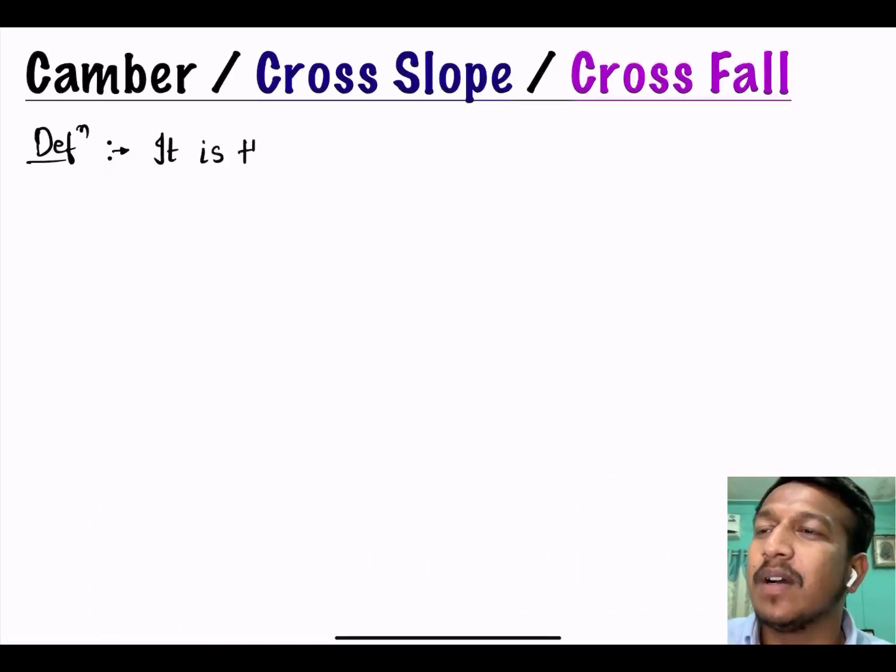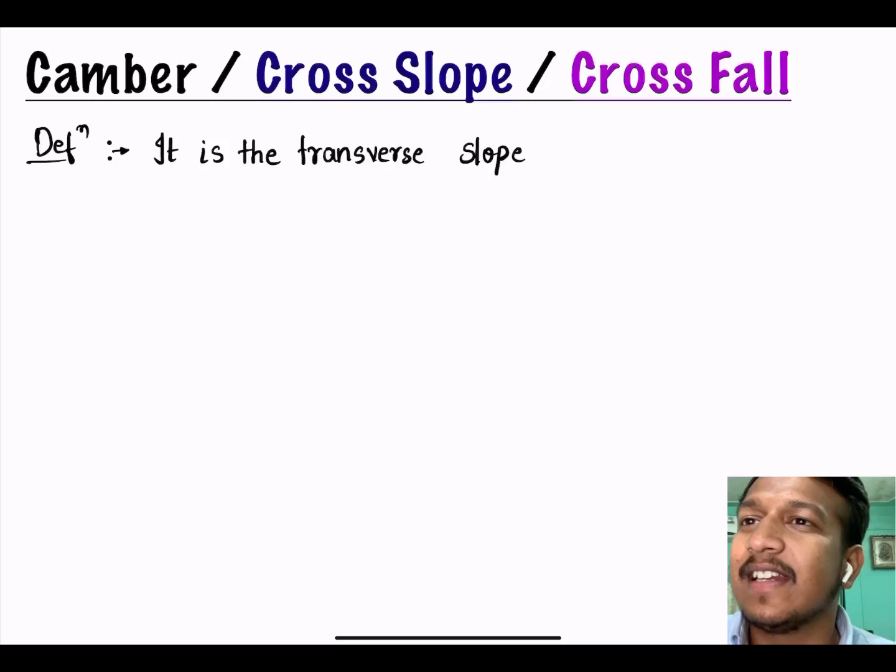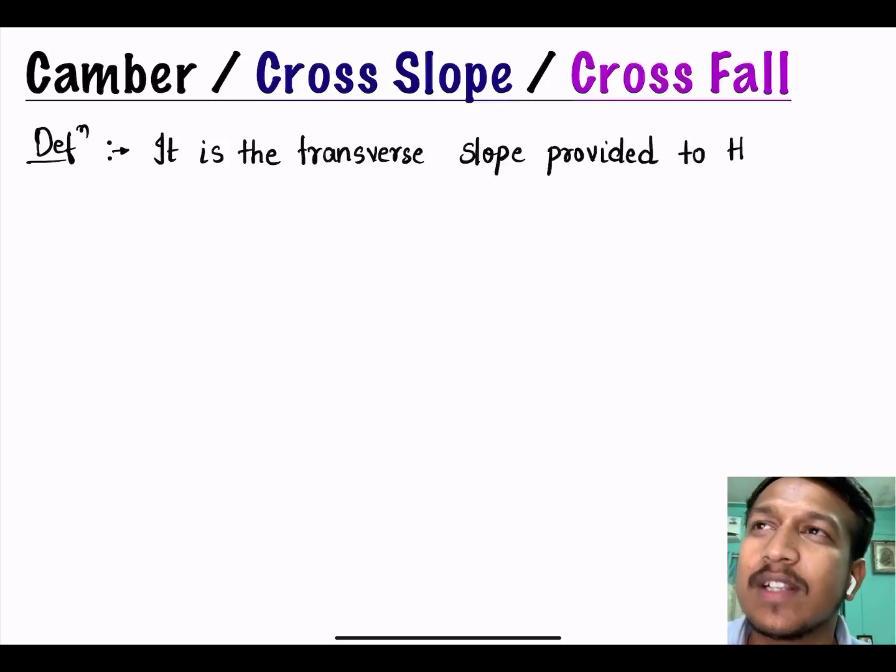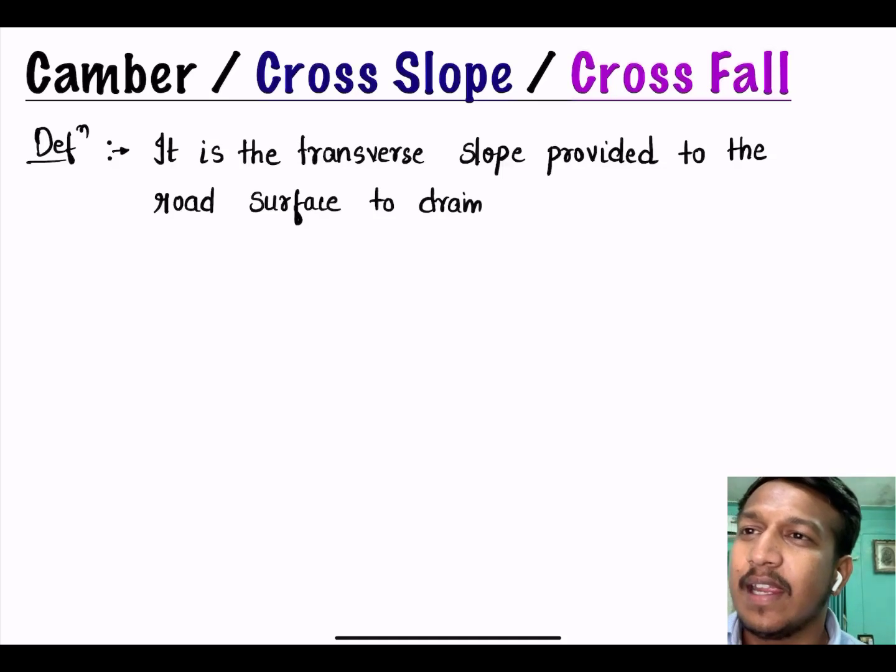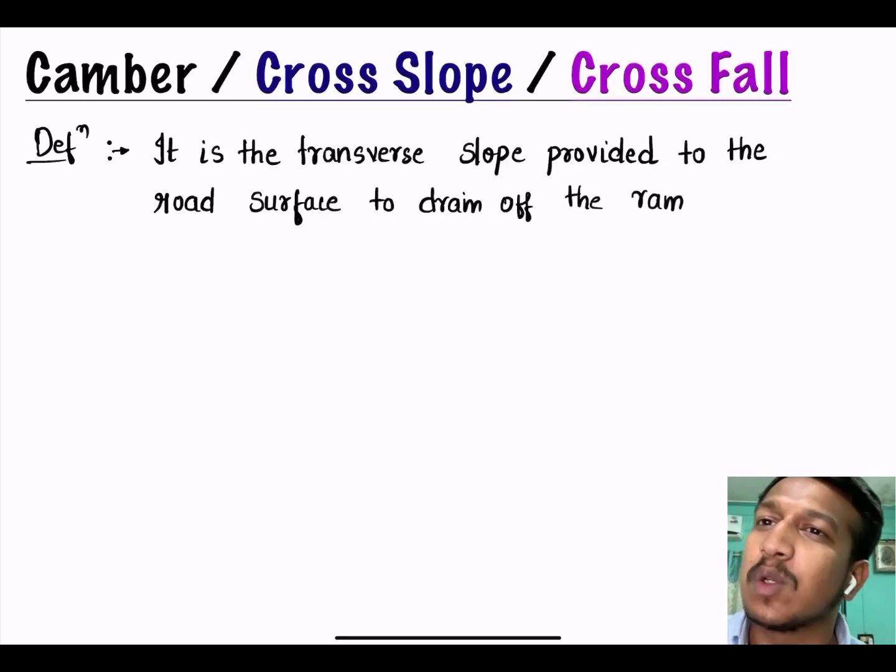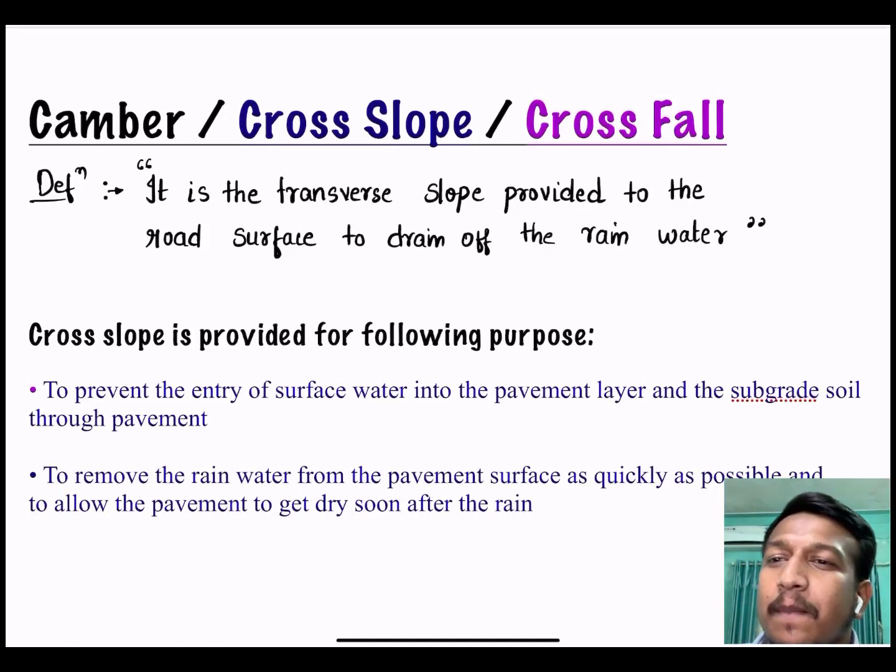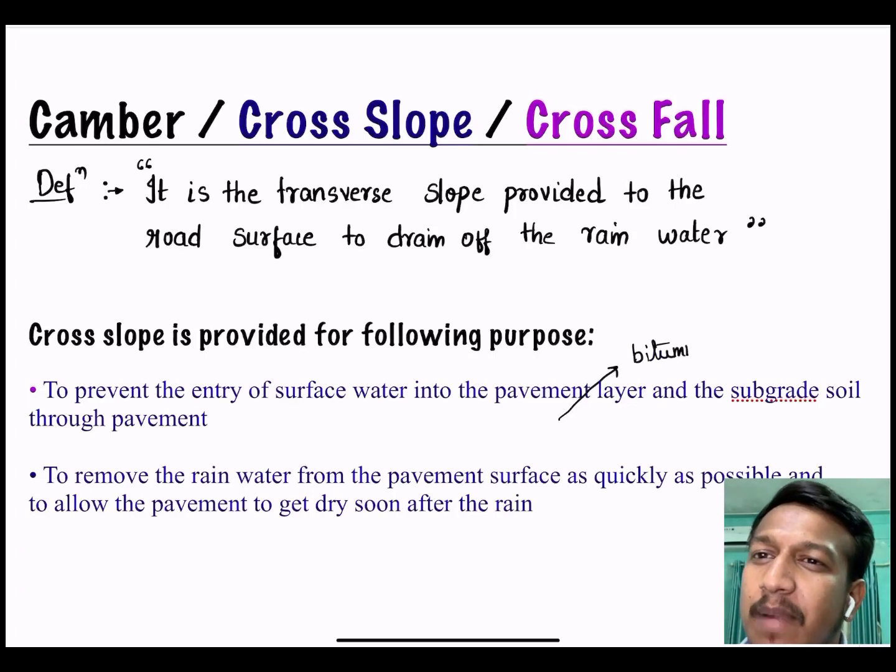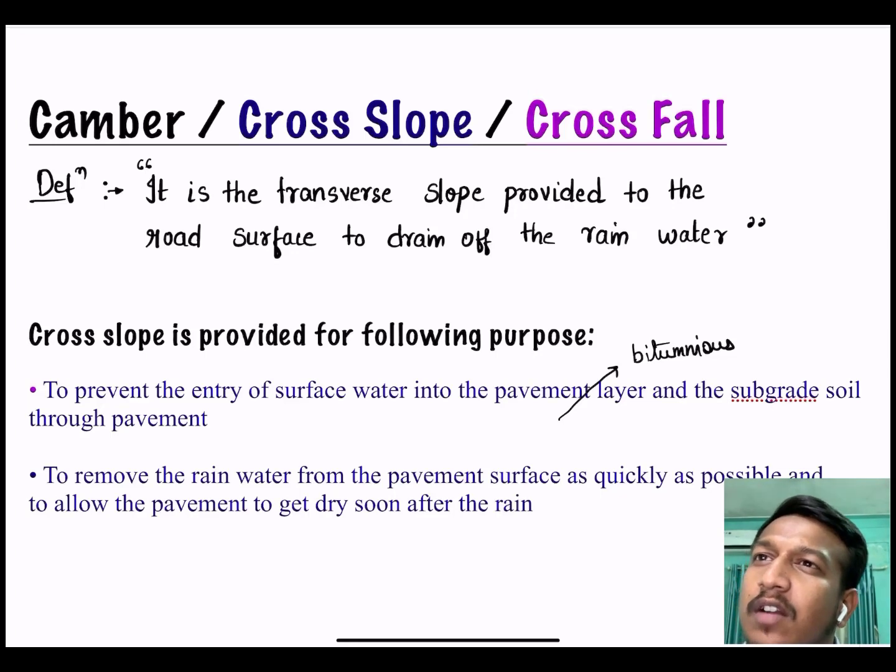First topic is camber, also known as cross slope or cross fall. It is the transverse slope provided to the road surface to drain off the rain water. Camber is provided first to prevent the entry of surface water into the pavement layer and subgrade soil, and second to remove the rain water from the pavement surface as quickly as possible and allow the pavement to dry.